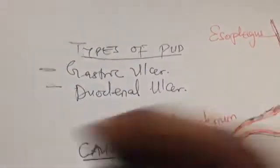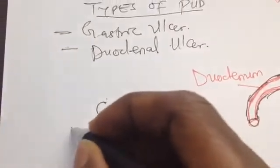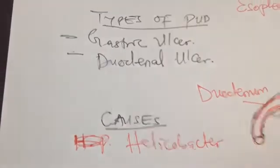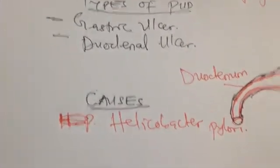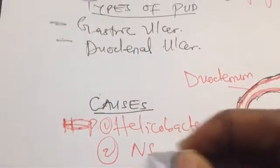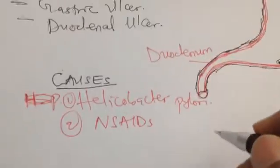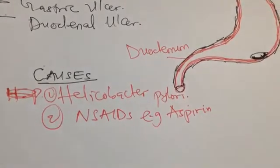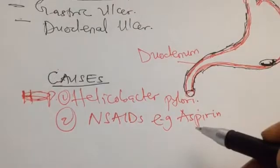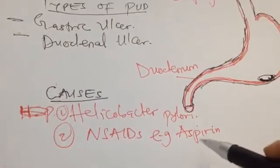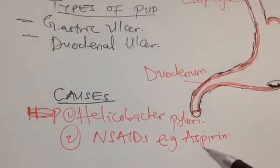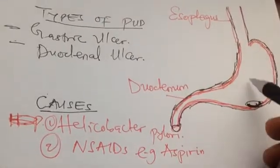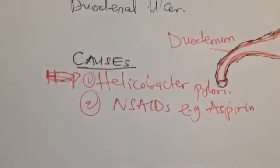The number one cause of ulcer is Helicobacter pylori, abbreviated as H. pylori. The second cause is drugs, especially non-steroidal anti-inflammatory drugs (NSAIDs) — for example, aspirin. Aspirin has toxic effects on the liver and kidneys. Patients who use aspirin chronically, such as those with orthopedic injuries, may not realize it is causing ulceration in the stomach.